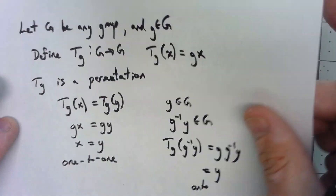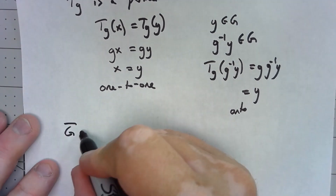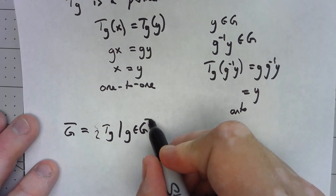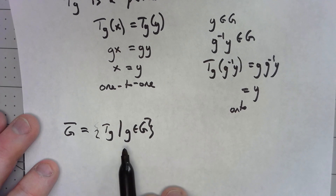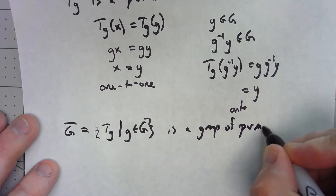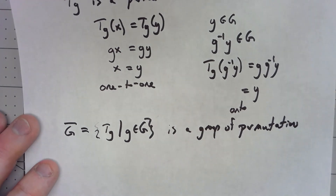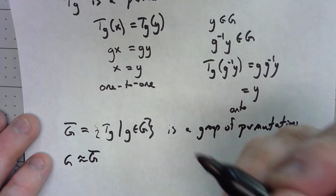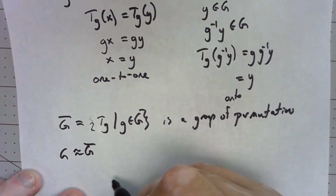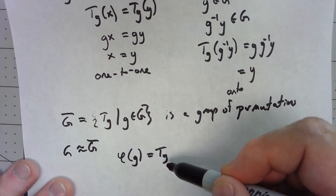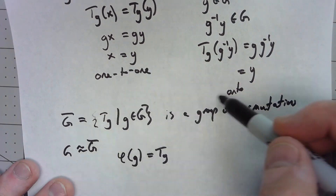I'm going to let Ḡ equal the set of all t_g such that g is in G, and I claim this is a group of permutations under function composition. Rather than verify that here, I'll claim that G is isomorphic to Ḡ through the map φ(g) = t_g. We proved each individual t_g is one-to-one and onto, but now we need to show that the isomorphism φ itself is one-to-one and onto.